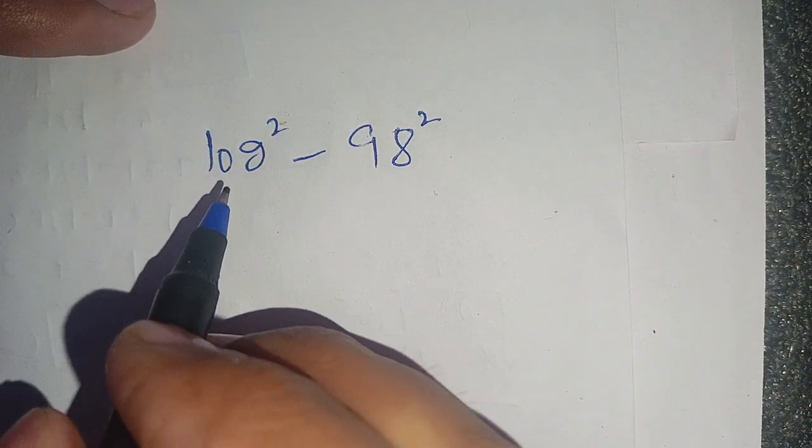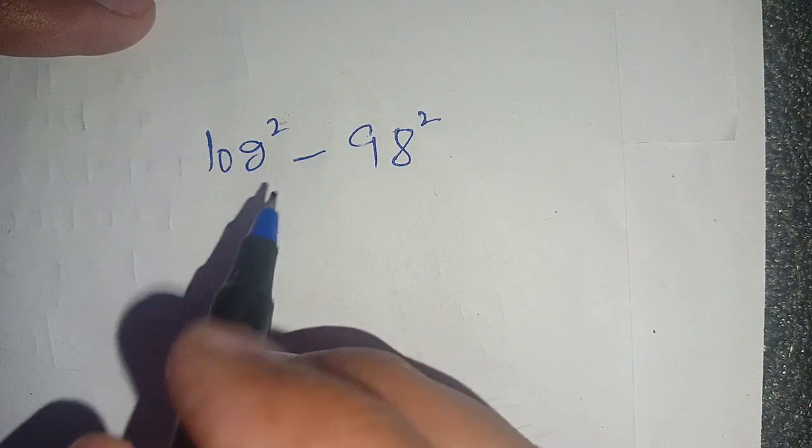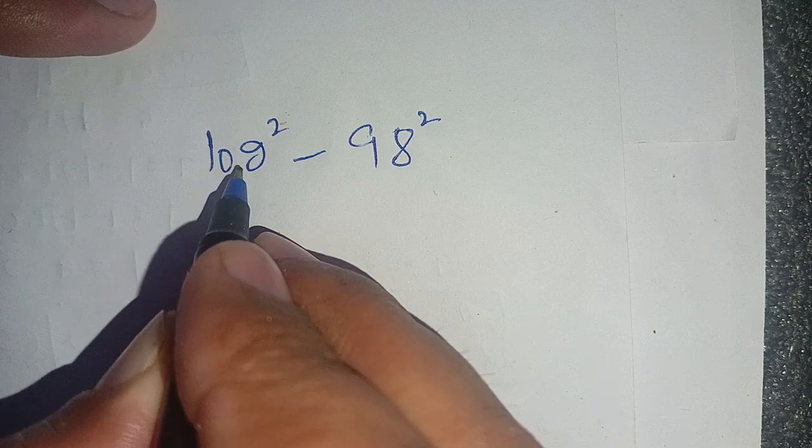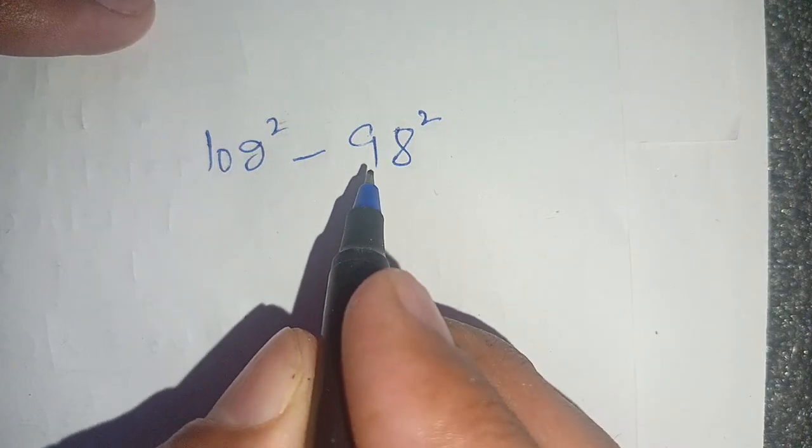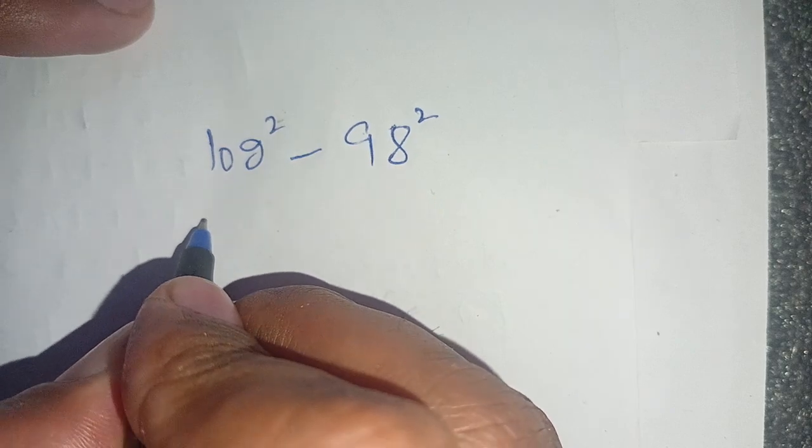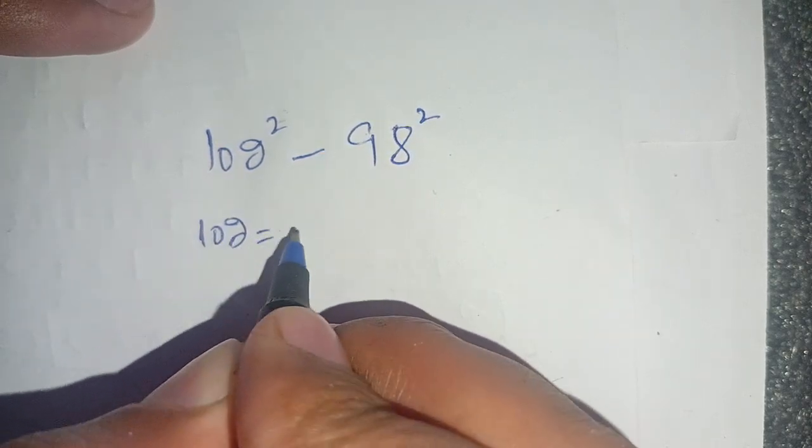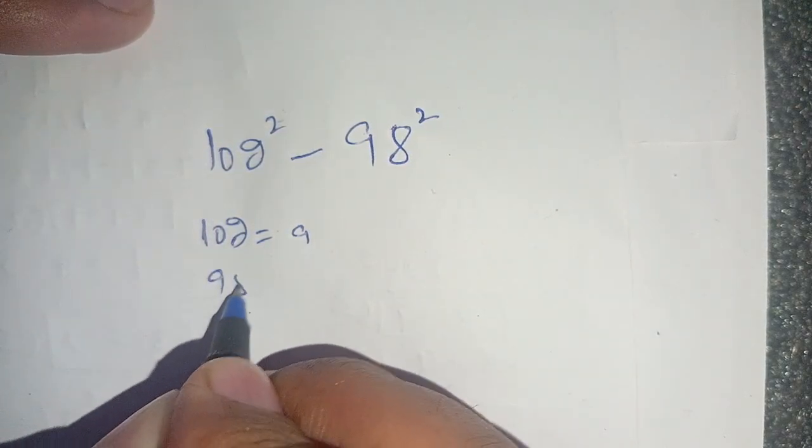Hello everyone, in today's video we are going to solve this difference of squares problem: 102 squared minus 98 squared. Let us solve this. First of all, we can consider 102 is equal to a and 98 is equal to b.